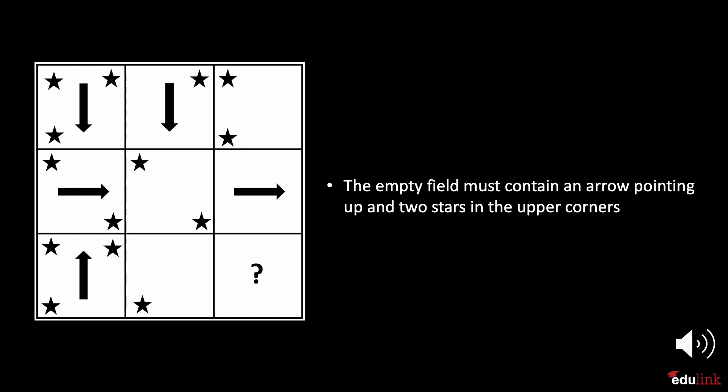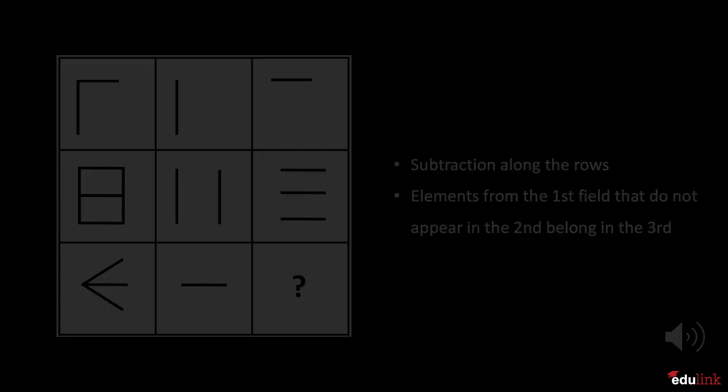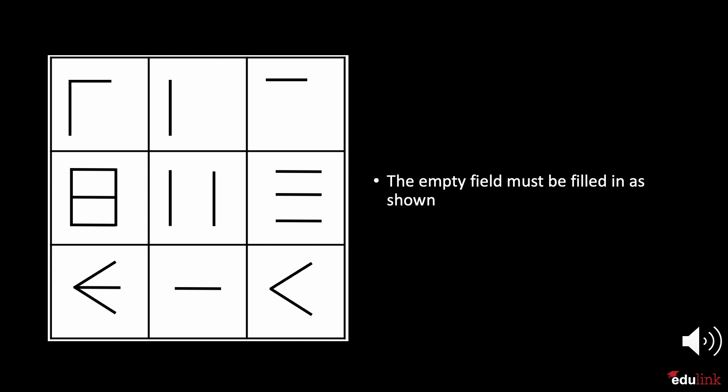Therefore, they are not subtracted and must remain in the third field. Now let's look at a slightly different example. This pattern also uses subtraction along the rows. The items in the second or middle box are not subtracted from the first box to the left. The elements from the first box that do not appear in the second box are the ones that we can assign to the third box. Now it's your turn to try and fill in the empty field. Here you can see how the pattern must be completed.